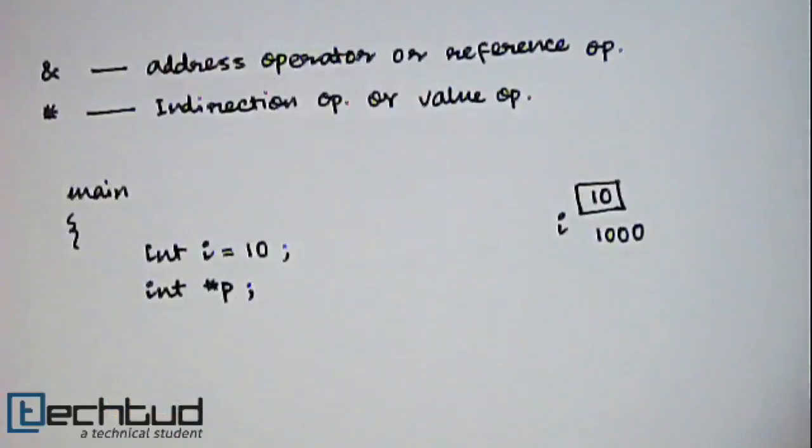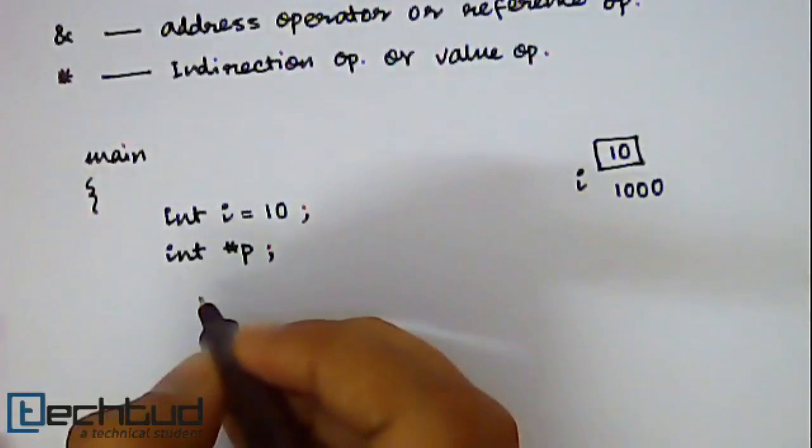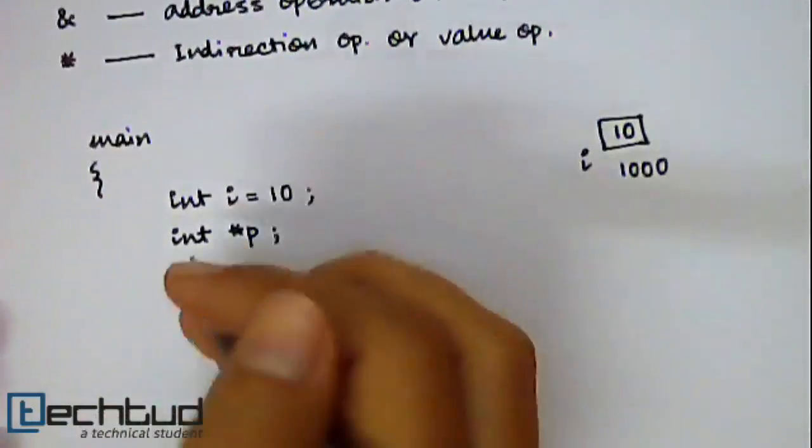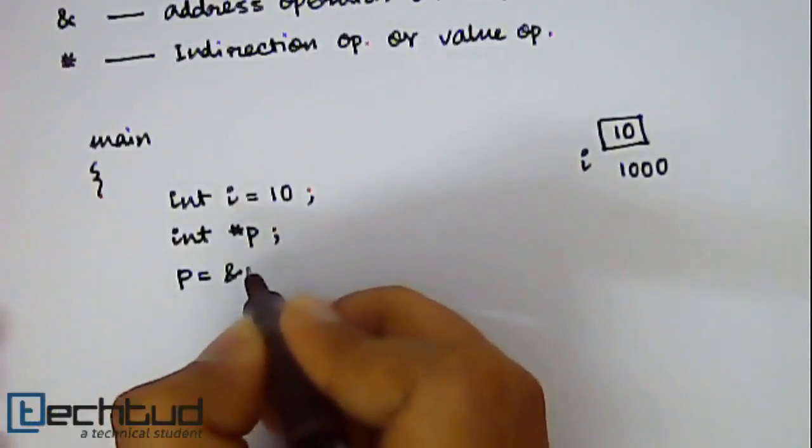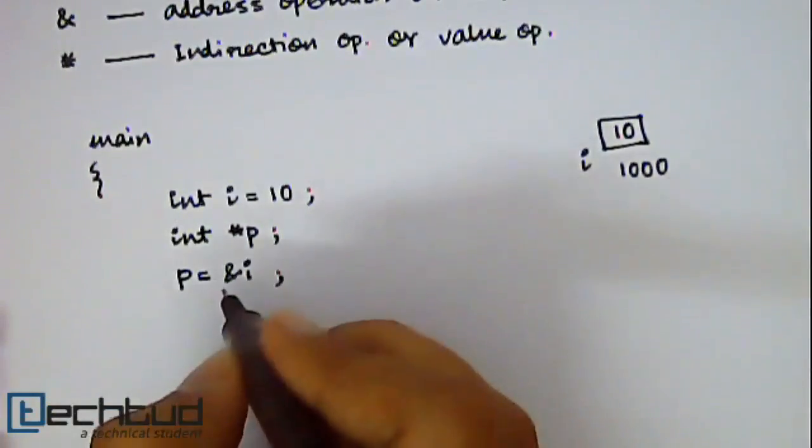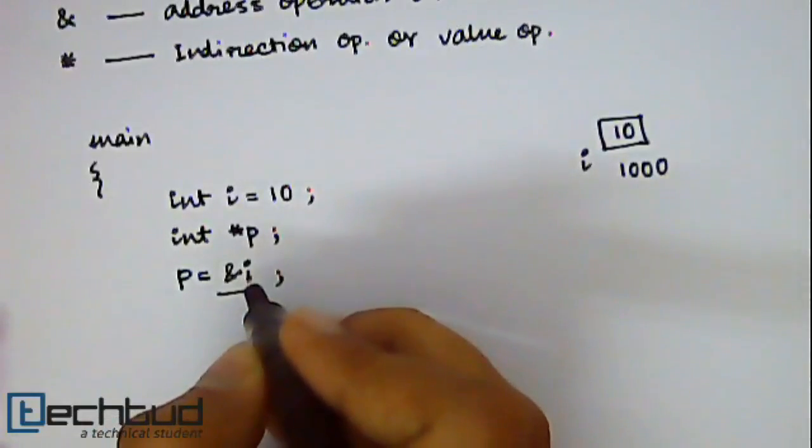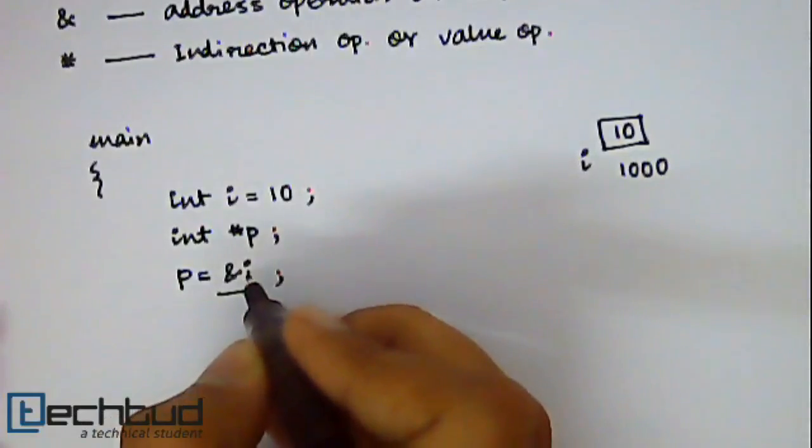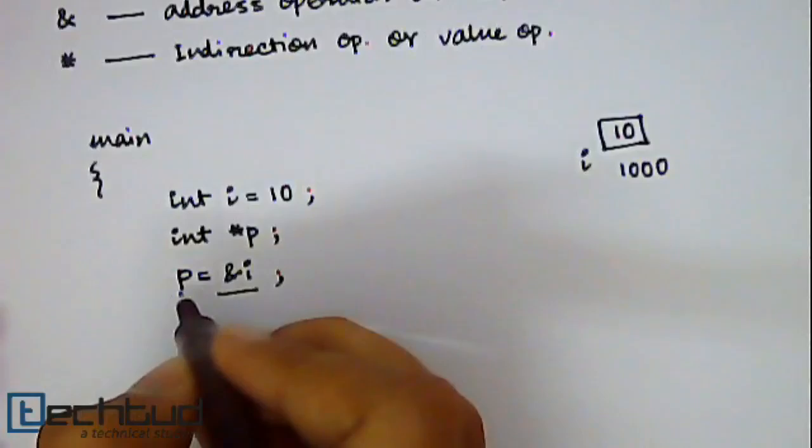Now you can store in p the address of any memory location of some integer variable. So p is equal to ampersand i. So what does this ampersand i mean? It means address of the particular memory location where i is located. So it will return 1000 and that 1000 you are storing inside p.